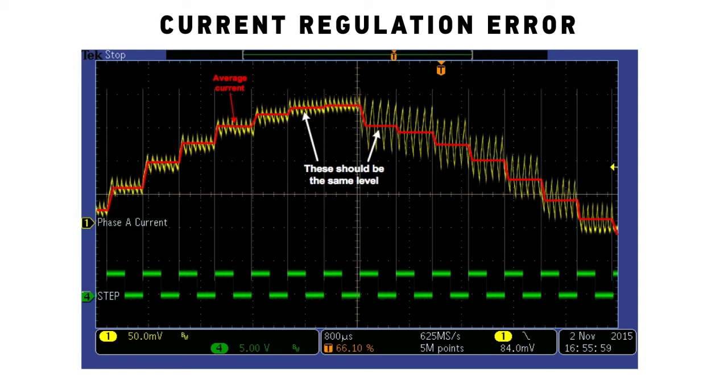You can see in this waveform that the average current level is much lower when driving the current towards zero because the current is not being sensed during the PWM off-time.